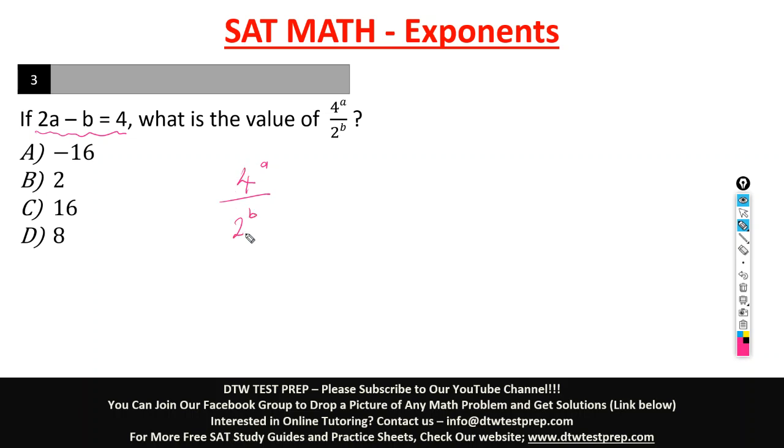All right, so we have to simplify this in a way that we should have 2a minus b. Then now put the value of 2a minus b as 4. So let's simplify this.